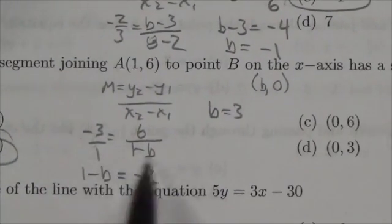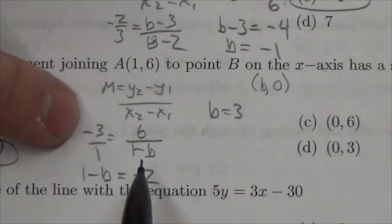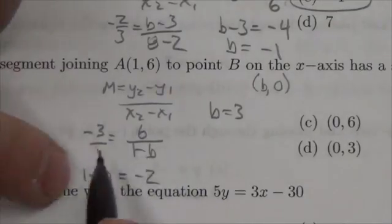Now again, if you don't like that, once you get to this point right here, this is a proportion. So again, we can cross multiply.